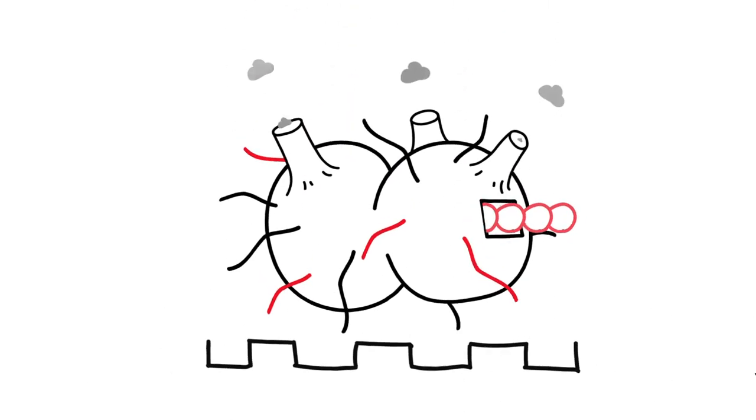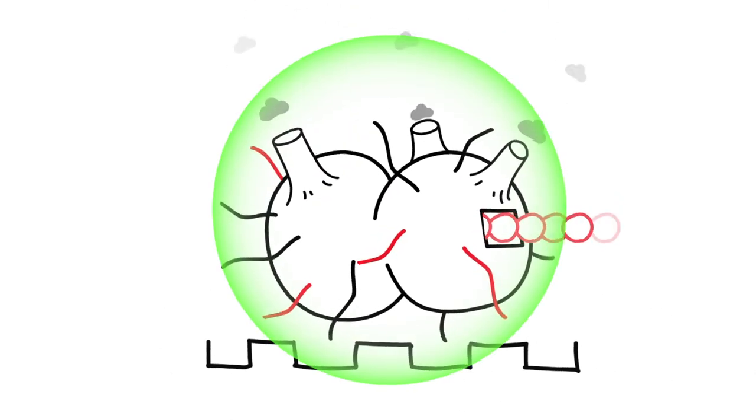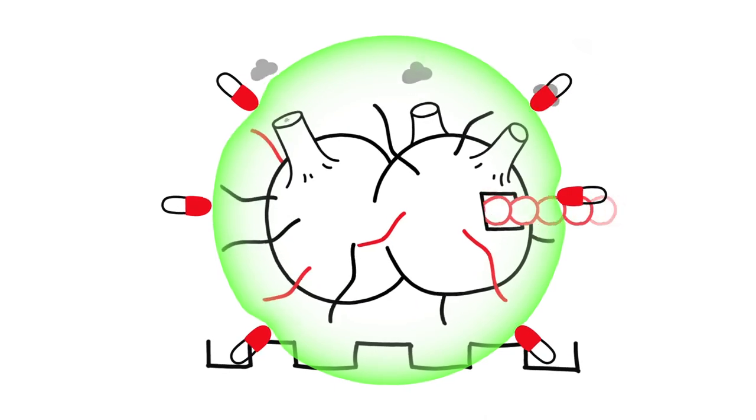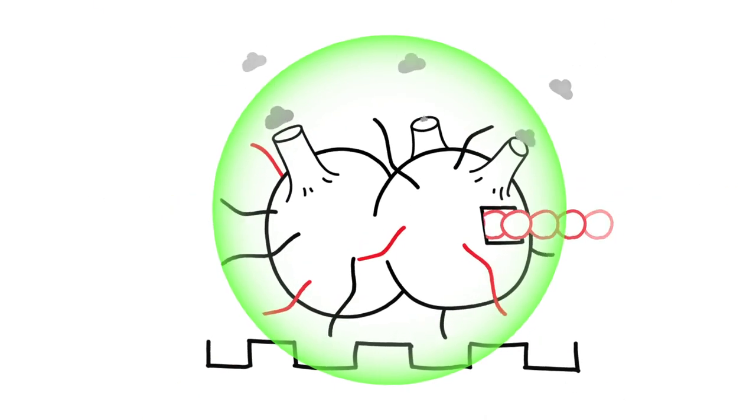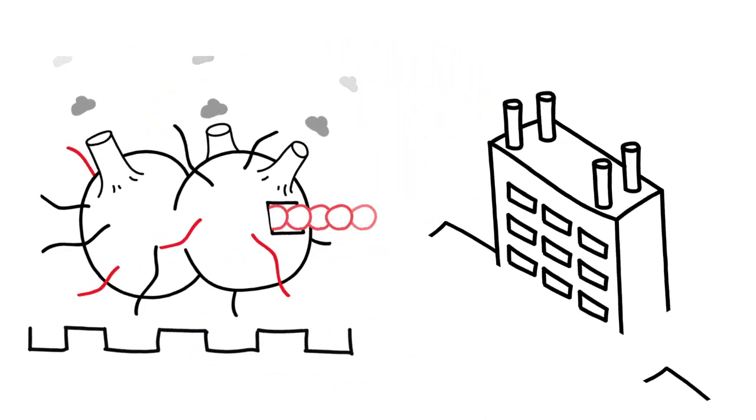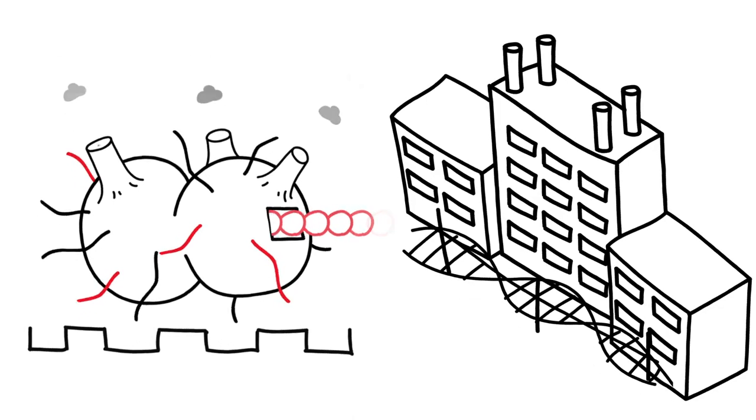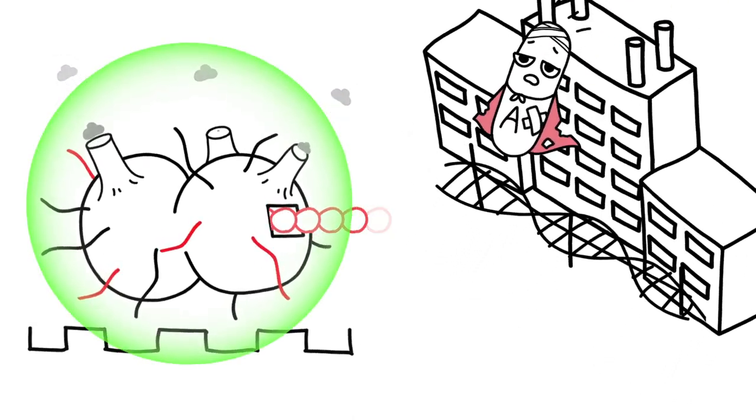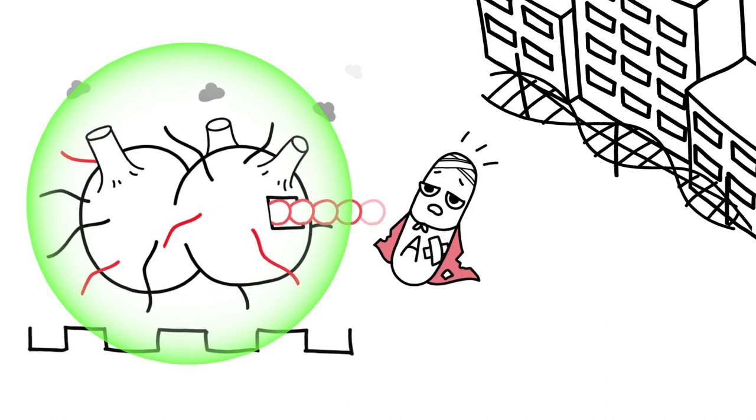In one of these super strains, DNA changes activate a pumping system. The pump prevents the antibiotics from flooding the gonorrhea cell. In the other strain, the DNA changes trigger renovation of the cell's factory. Azithromycin can get into the cell, but cannot stop the production lines from running.